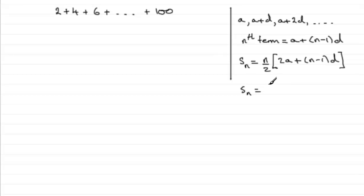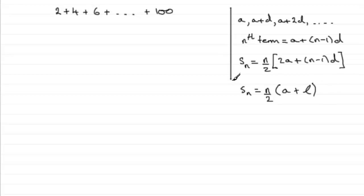There is another formula which is sometimes useful, and on this occasion it is the more useful one to have: the sum of the first n terms can also be expressed as n over 2, all multiplied by the first term plus the last term.